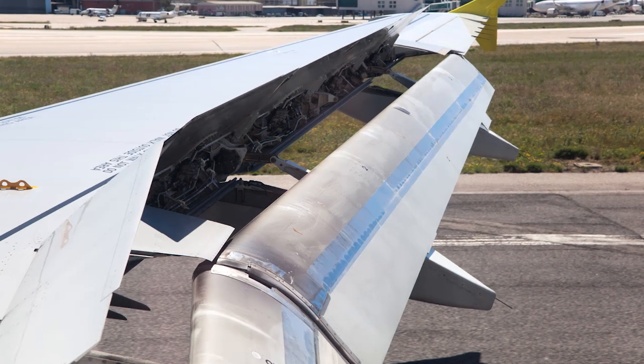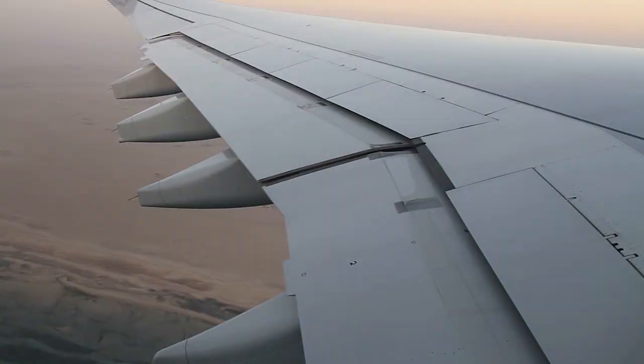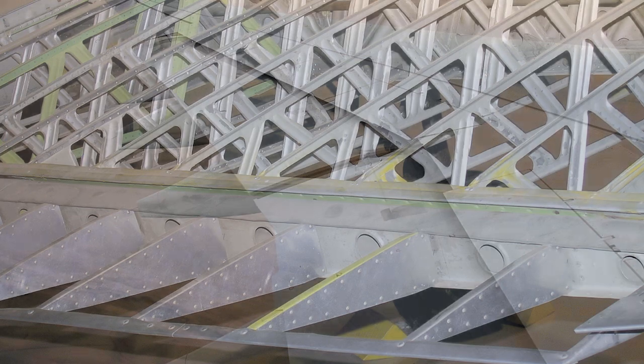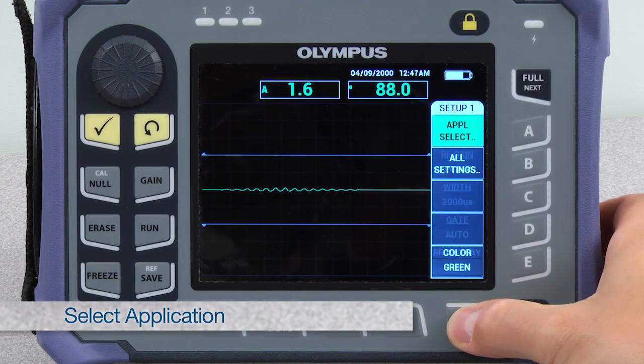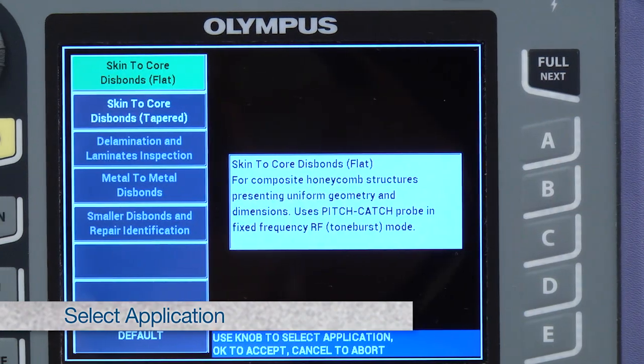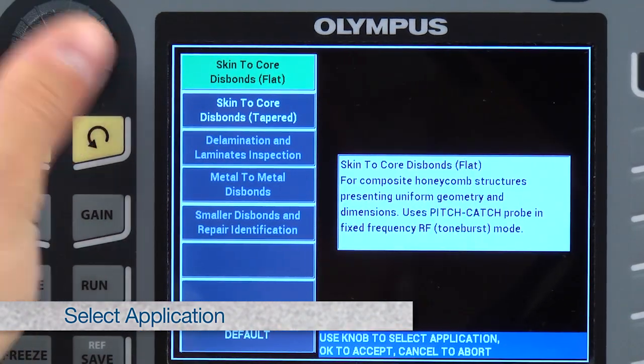The pitch catch sweep method is great to detect disbonds in tapered honeycomb composites or in aluminum core composites. Press the advanced setup key and then application selection. Select the skin to core tapered application.